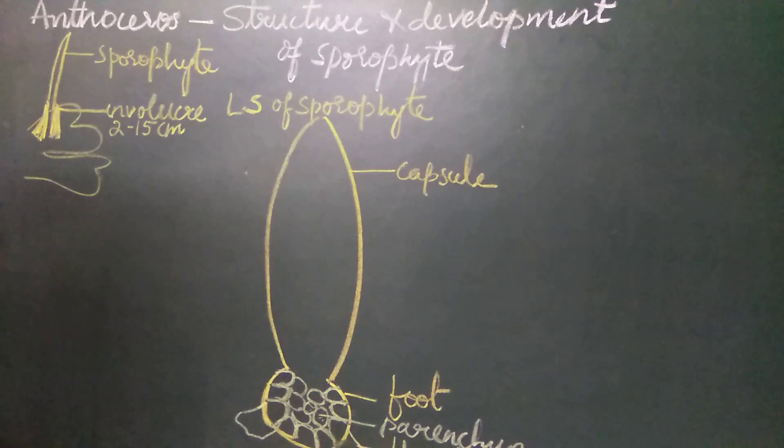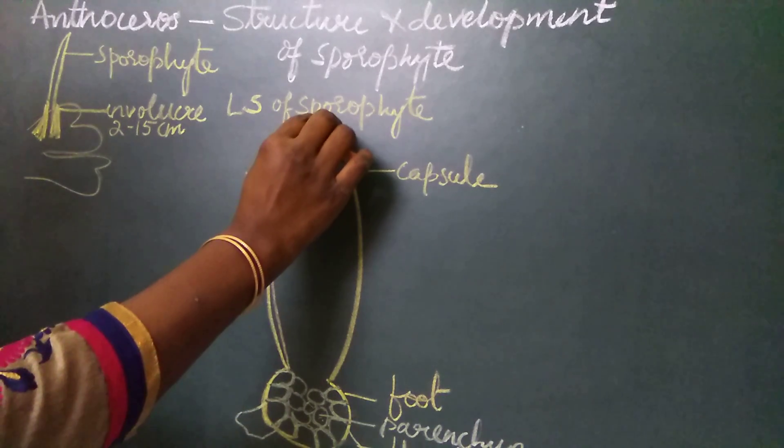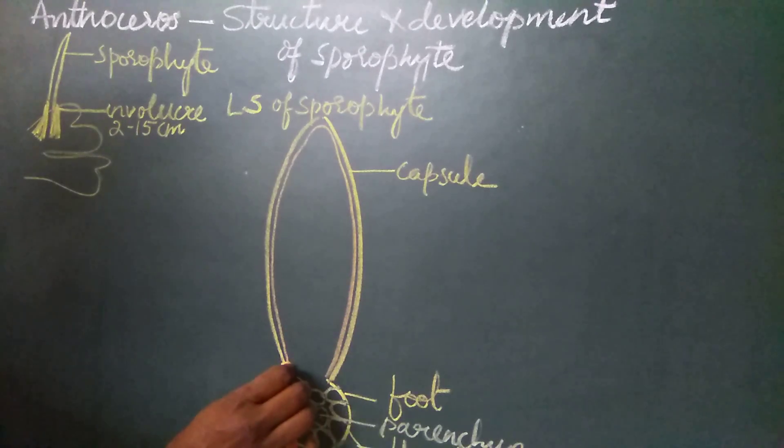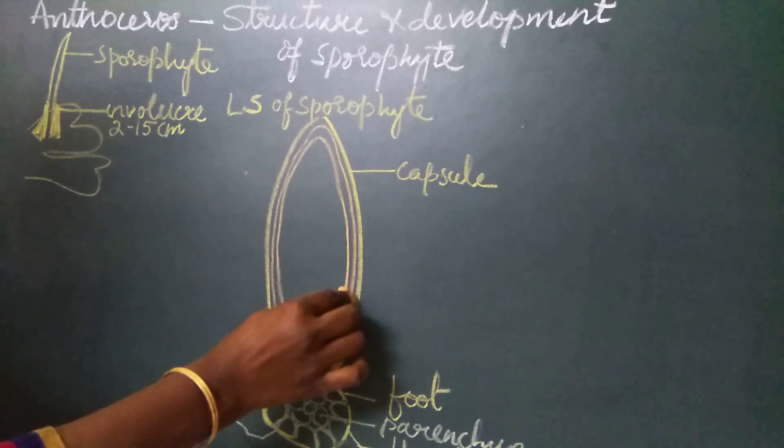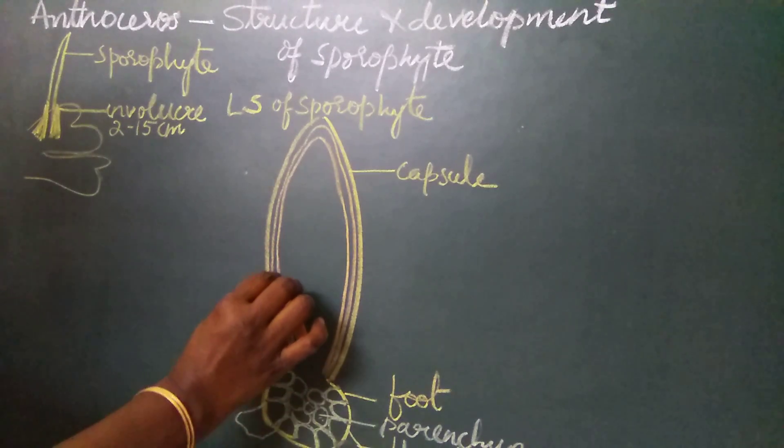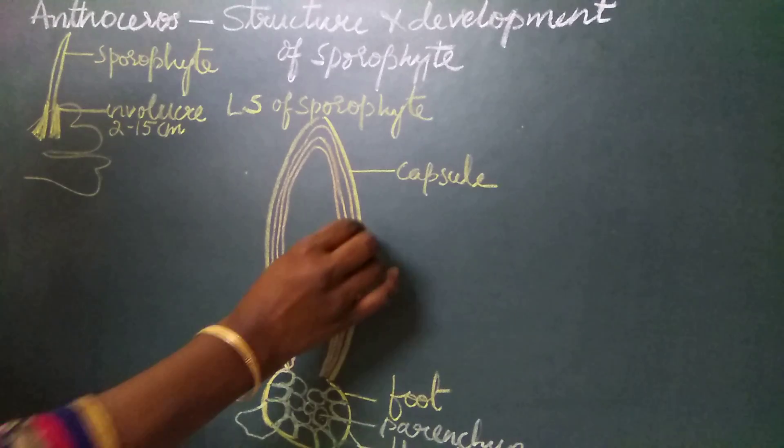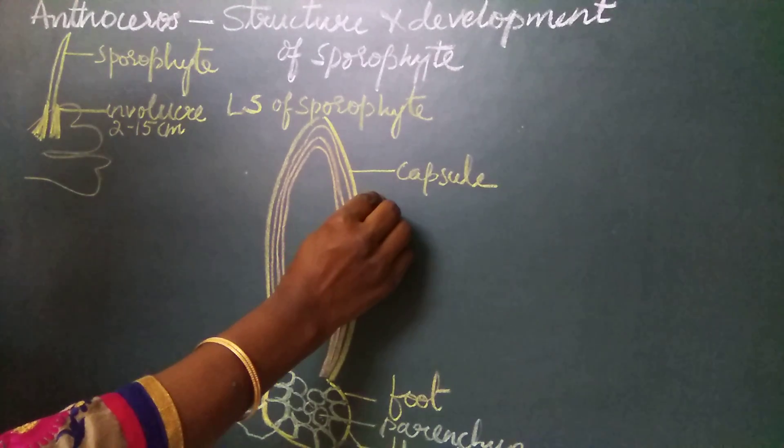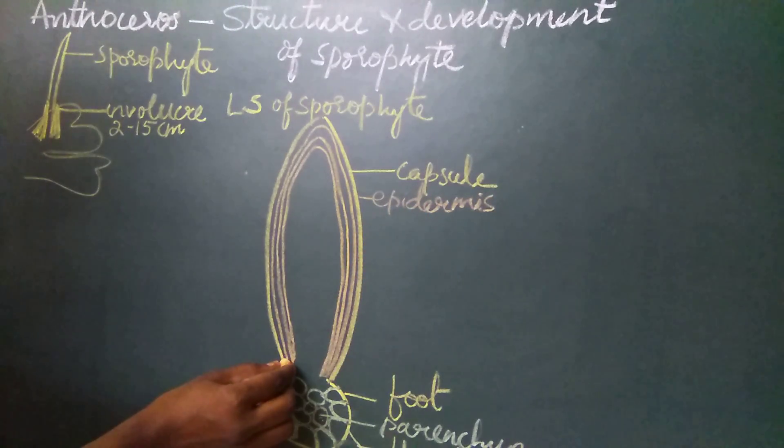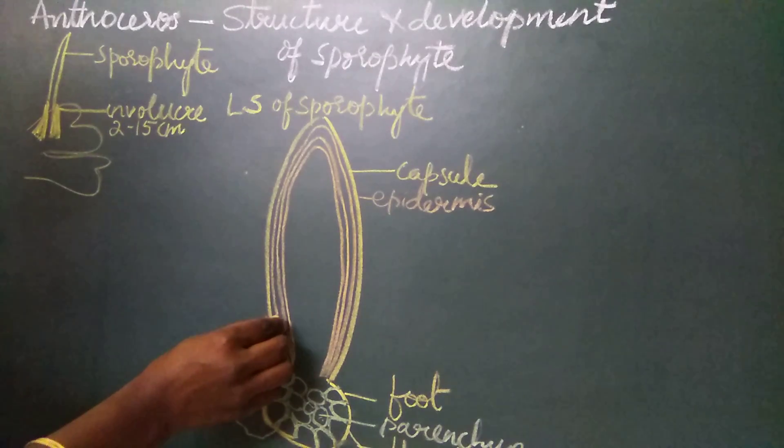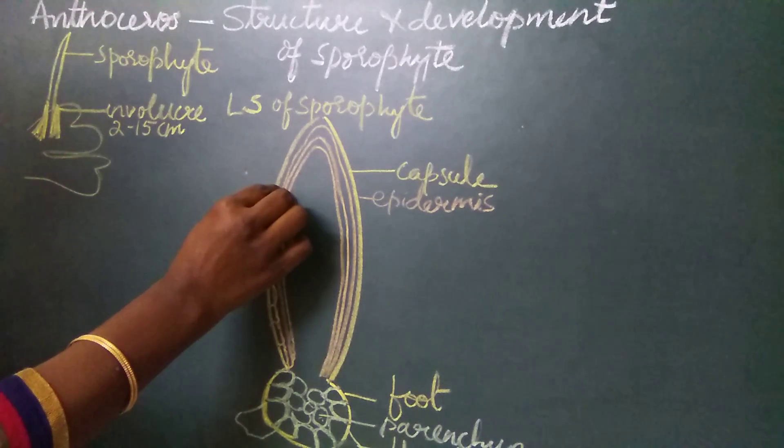The capsule is made up of four to six layers of cells called the capsule wall layers. These layers are formed by the periclinal division of the amphithecial cells. The outermost layer of the capsule wall is the epidermis, made up of vertically elongated cells which are highly cutinized with thick walls.